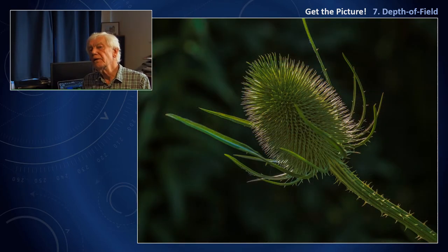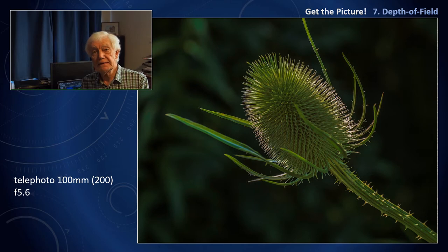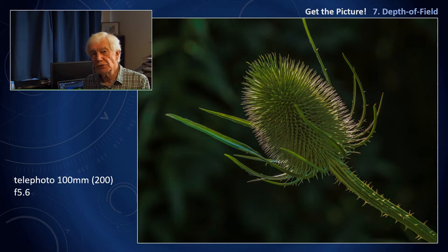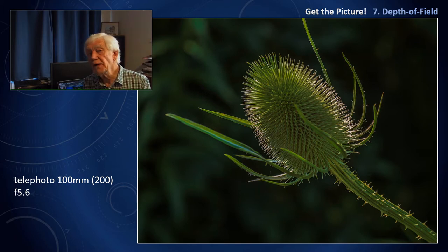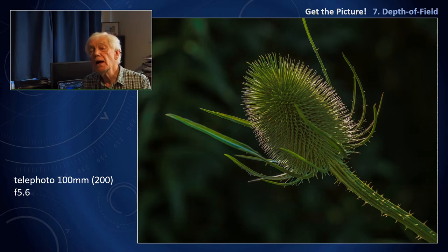Now with this shot of a teasel, I've done exactly the opposite, so that it stands out from the background, which of course is unsharp. Only the teasel is sharp. It's a combination of a large aperture, which reduces depth of field, and a telephoto lens.